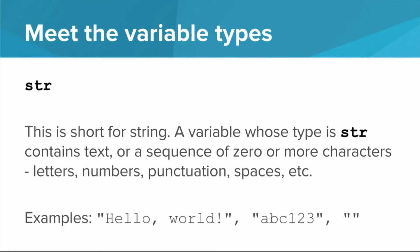Okay, so what do these types mean? Str is short for string. A variable whose type is str contains text, or a sequence of zero or more characters. And these characters can be letters, numbers, punctuation, spaces, whatever you can type on your keyboard.